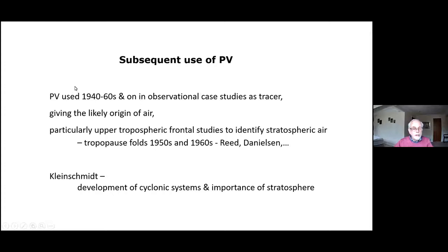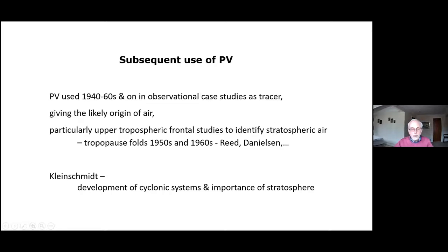Subsequent use of potential vorticity really all followed from Rossby's work, developed in Chicago and more widely. The tracer aspect was very much used in observational case studies, particularly giving the likely origin of air. If you saw a large potential vorticity, you could think that air had come from a reservoir of larger PV — and the biggest reservoir of large PV is the stratosphere. This was particularly used in studies of upper tropospheric fronts.